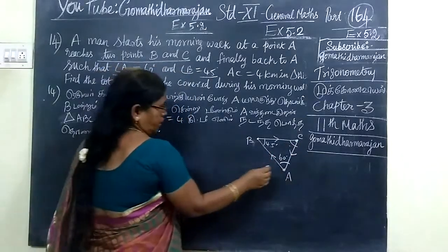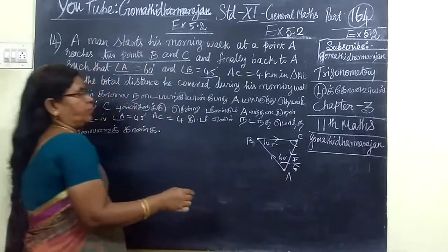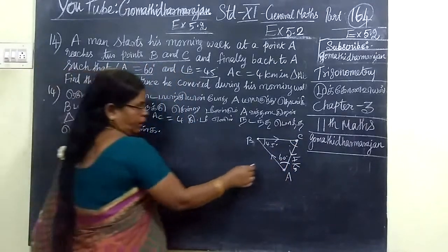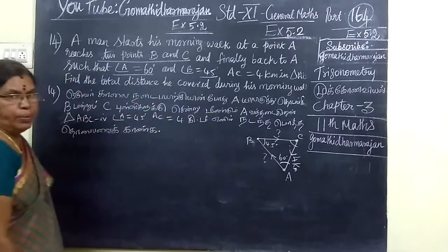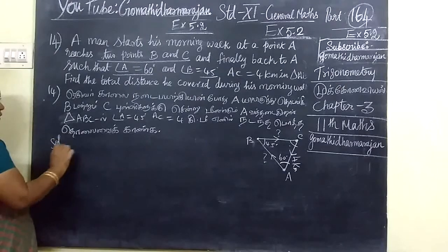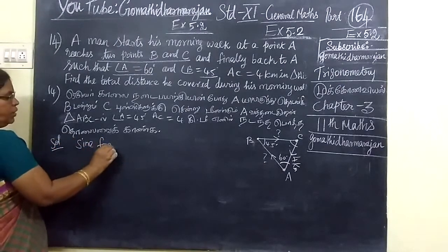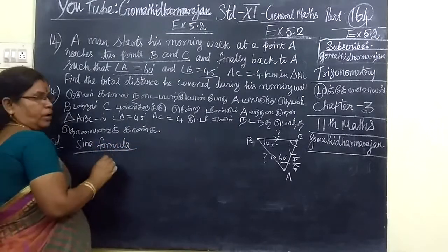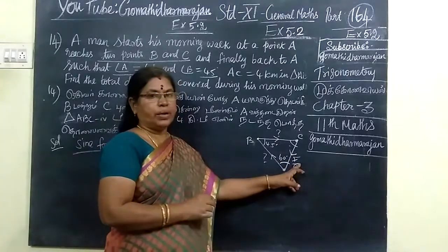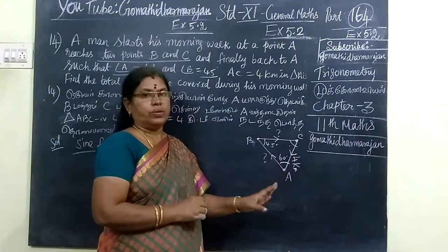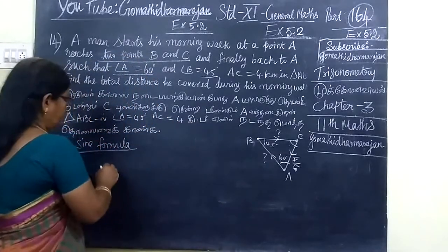Now, we will start with A. AC is 4 kilometers. So we will start with BC. For this, we are using sine side formula. So we are using sine formula. Now, if we have sine formula, we will draw with sine formula angle opposite side. We are using sine formula. We are giving angle and opposite side.